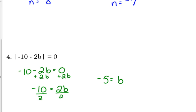If you check it: negative 10 minus 2 times negative 5 gives you negative 10 plus 10, which is zero. So most of the time you're going to have two solutions with your absolute value equations, but every once in a while you just end up with one.